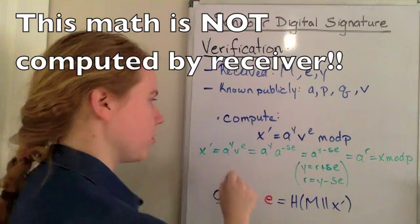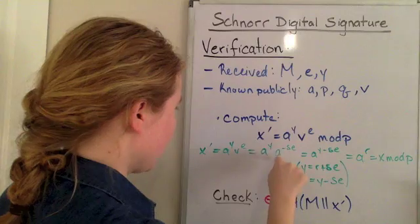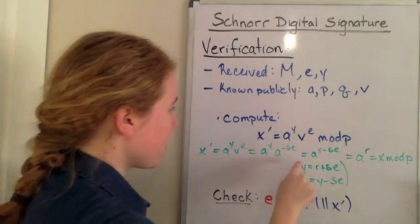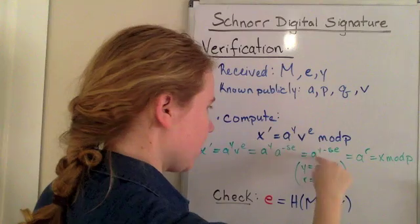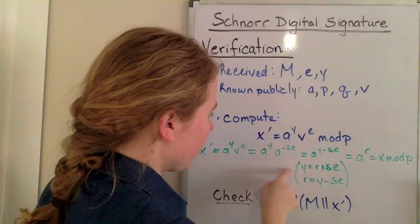If you recall, v equals a to the negative s. So I substituted a to the negative s in here for v, and then I rewrote that using simple exponent rules. And then if you recall,